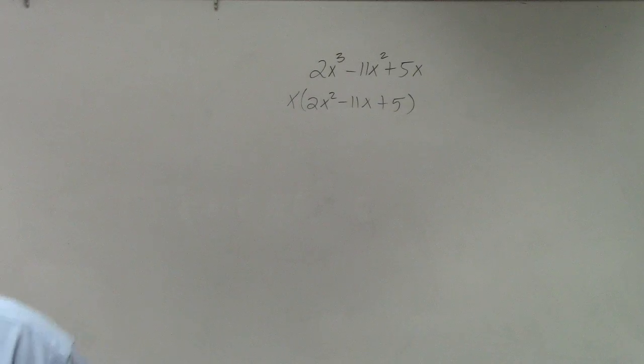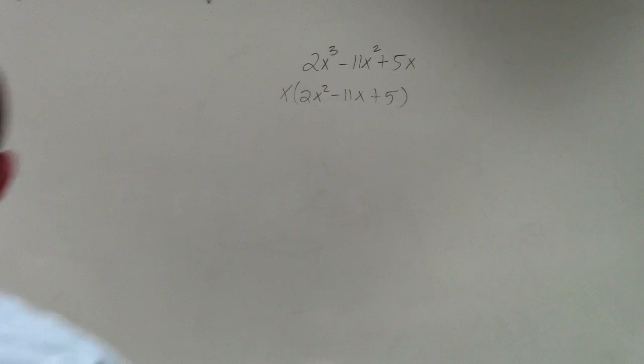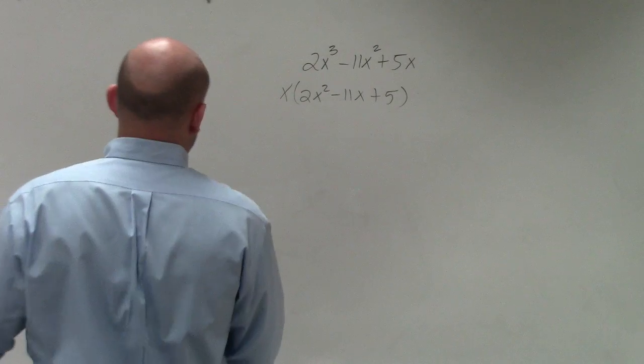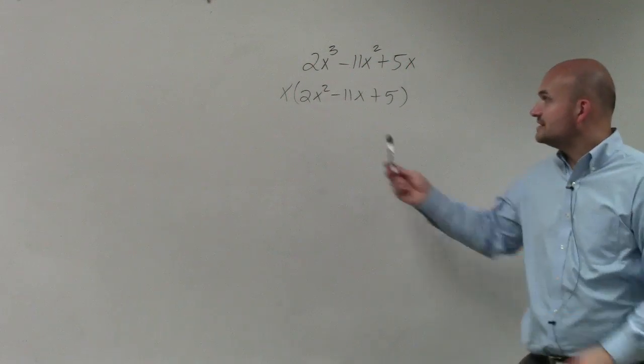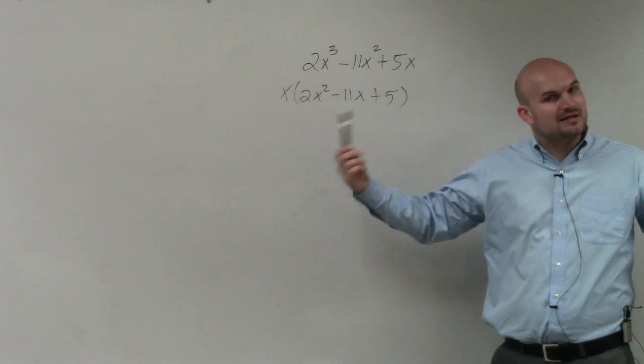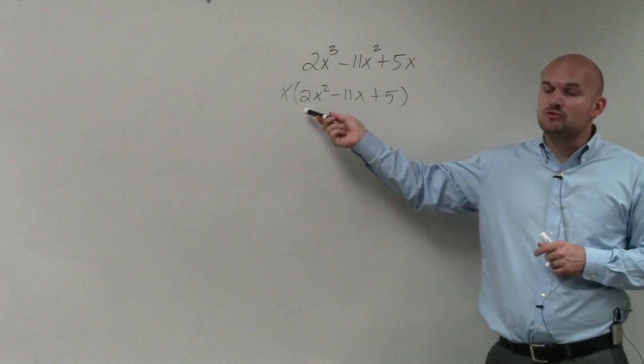Now, they're asking us to factor it completely over real numbers. That means we want to make sure that we can factor it or write it as a list of factors. So we want to be able to see, can we continue to factor this down? There's a couple different ways that we've talked about as far as factoring when a is not equal to 1.